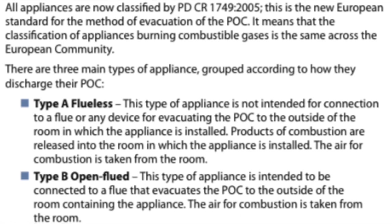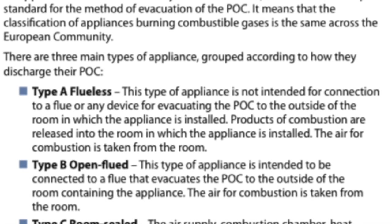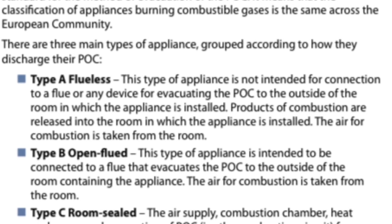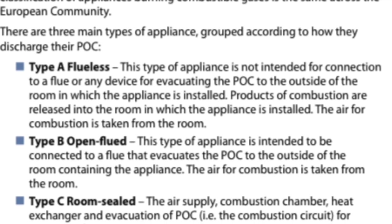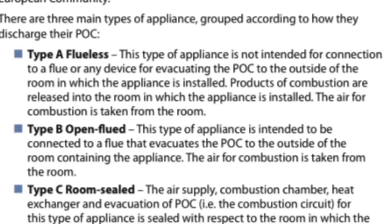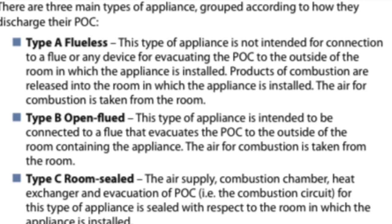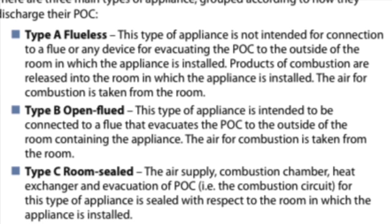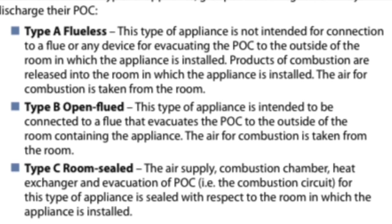Type A appliances are not intended for connection to a flue or any device for evacuating products of combustion to the outside. The products of combustion are released into the room in which the appliance is installed, and the air for combustion is taken from that room. Examples include a cooker, a flueless space heater, and a flueless water heater.